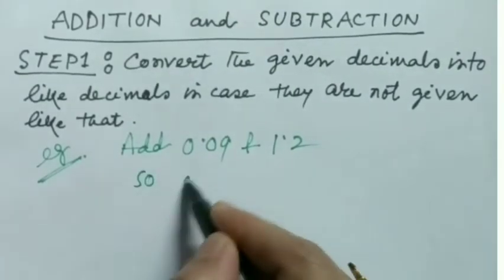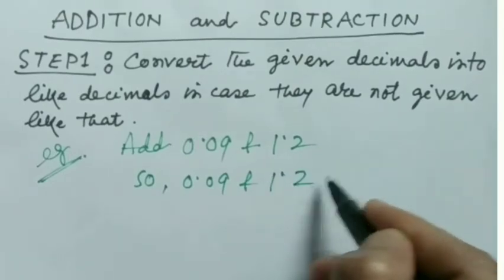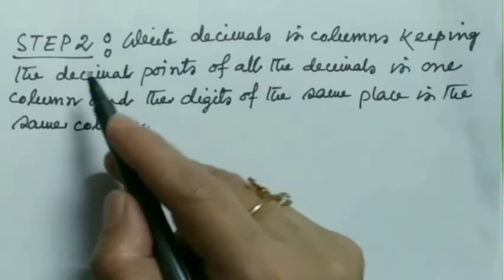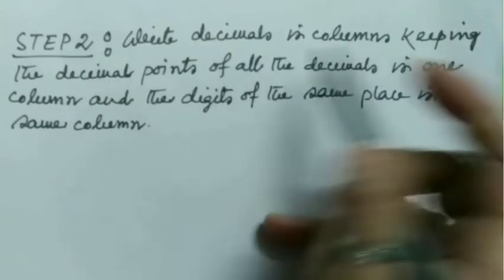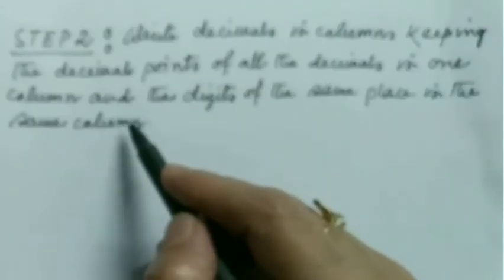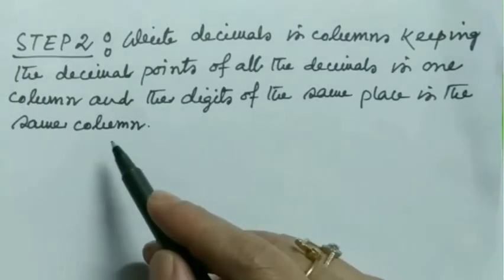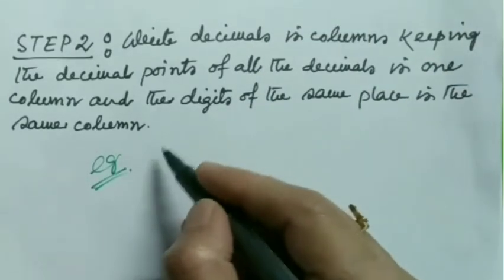Step number two: write decimals in columns, keeping the decimal points of all the decimals in one column and the digits of the same place in the same column. For example, I'm taking this previous one.